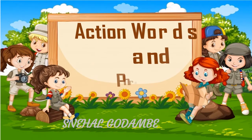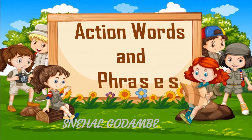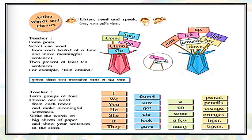we are going to do an activity from our English textbook. The name of the activity is Action Words and Praises. The activity is: Listen, Read and Speak. In Marathi: Aika, Vacha and Bola. We have to listen, we have to read, and we will speak.